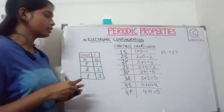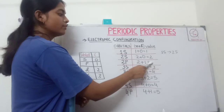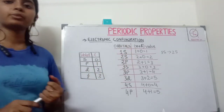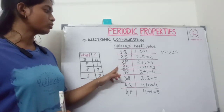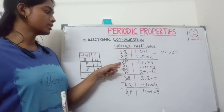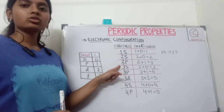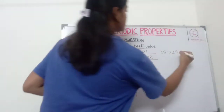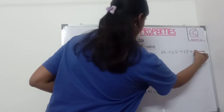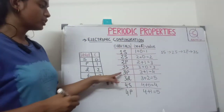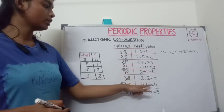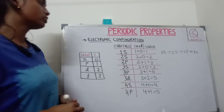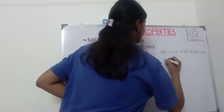Here we can see that 2p and 3s have similar n plus l values, both equal to 3. In this case, priority is given according to the principal quantum number n. The principal quantum number for 2p is 2 and for 3s it is 3, so 2p has less energy and will be filled first, then 3s. Similarly, 3p and 4s have the same n plus l value of 4, so again we check n: 3p has n equal to 3 and will be filled before 4s. Like that, the arrangements are decided according to the n plus l rule.